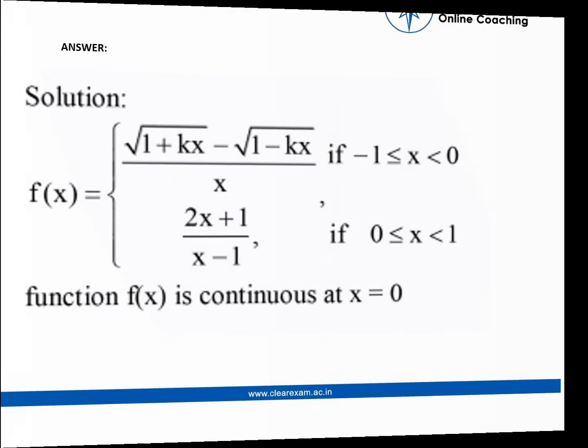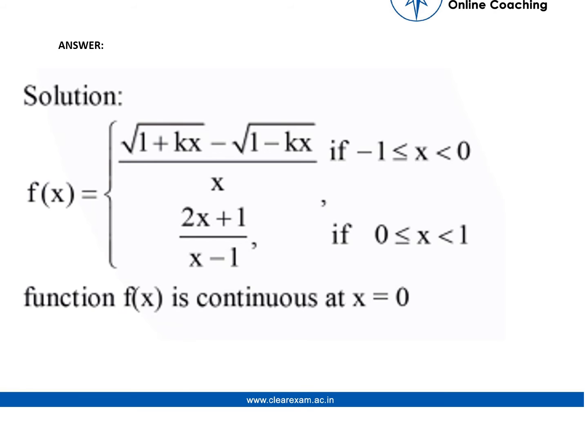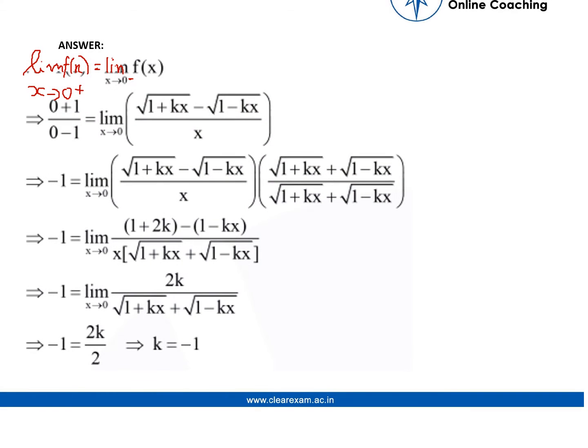We will apply LHL on this part and RHL on this, and we will equate them. Here we are finding the RHL, that is limit of f(x) at x tending to 0 plus. This is the notation for RHL and the value we are getting is minus 1.